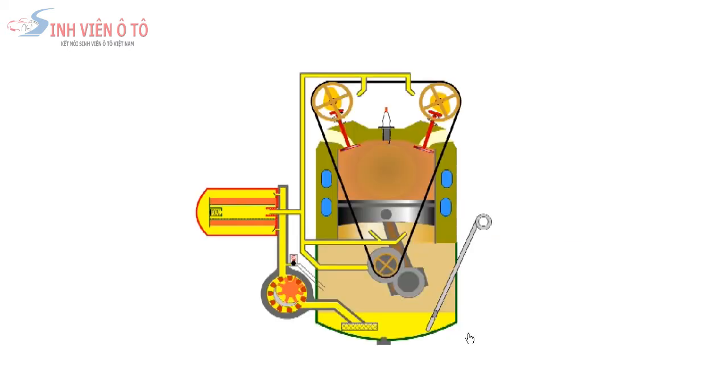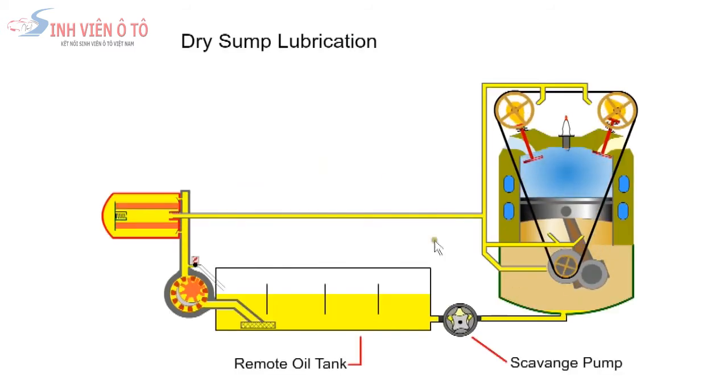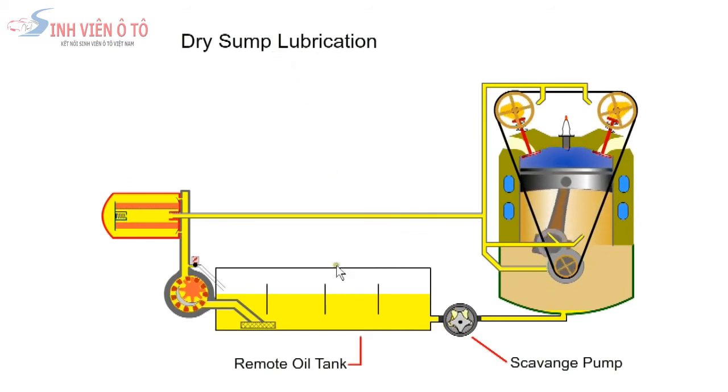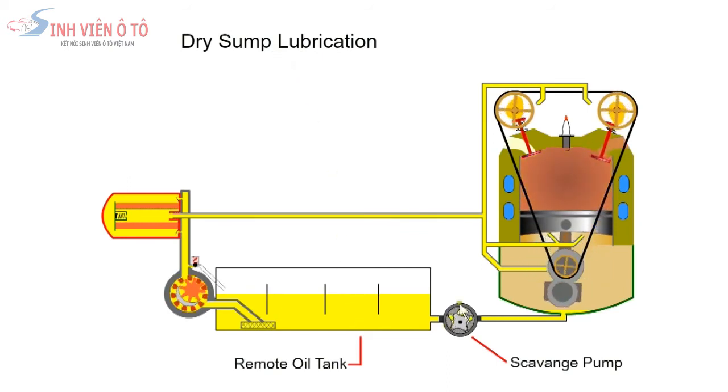So far, we have described a wet sump which is used on most road cars. The sump is located at the bottom of the engine, the design is simple and the oil is stored close to where it is needed. Some cars, such as high performance cars, have a dry sump which has an external reservoir which is not located under the engine.